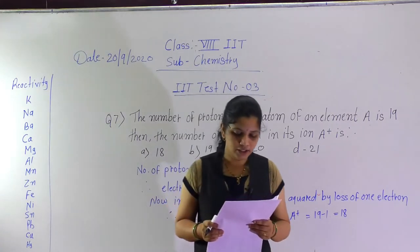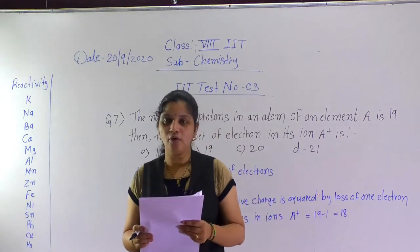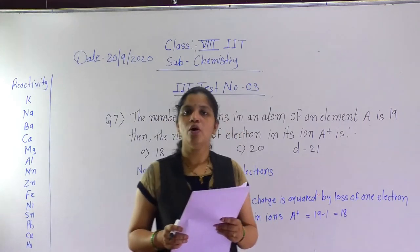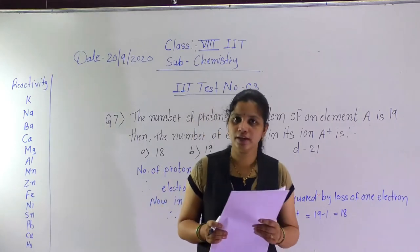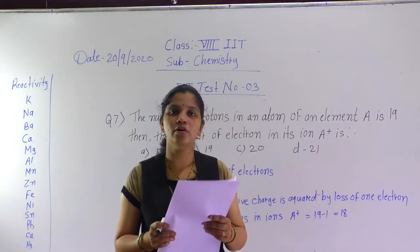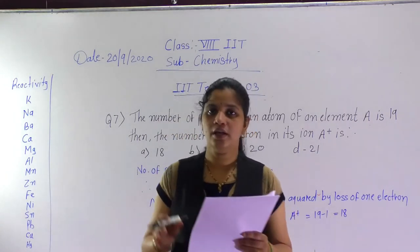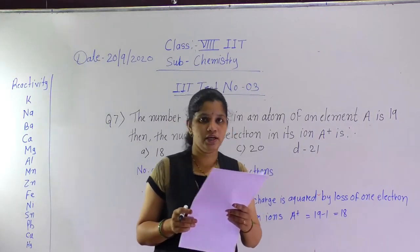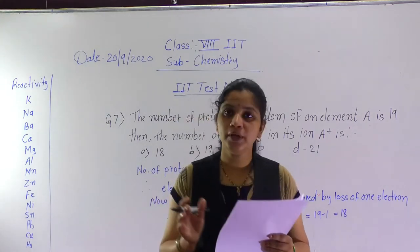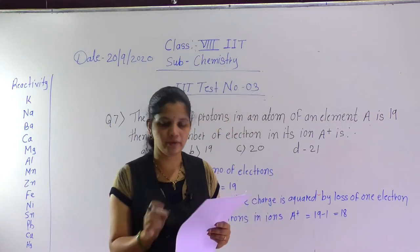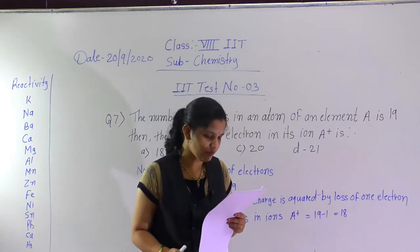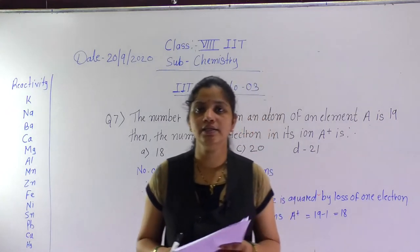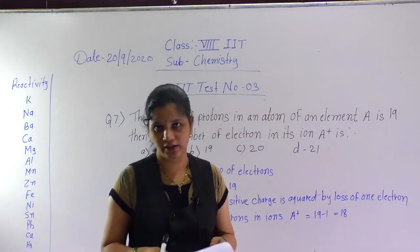Question number 2: all materials show the property of malleability except. Here all metals are given, and you have to identify which one does not show malleability. The correct answer is graphite.